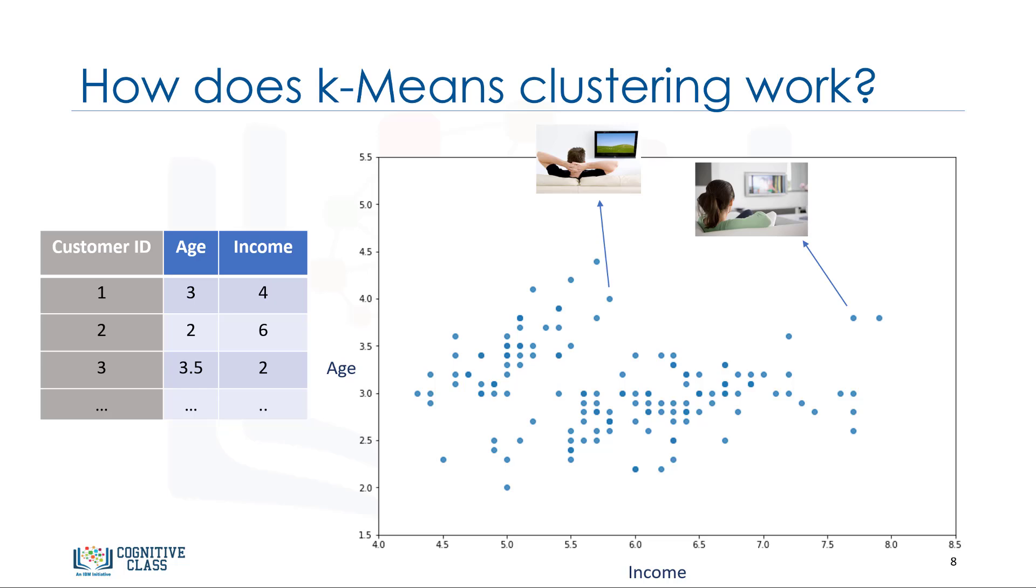Now, let's see how k-means clustering works. For the sake of simplicity, let's assume that our dataset has only two features, the age and income of customers. This means it's a two-dimensional space. We can show the distribution of customers using a scatter plot. The y-axis indicates age and the x-axis shows income of customers. We try to cluster the customer dataset into distinct groups or clusters based on these two dimensions.